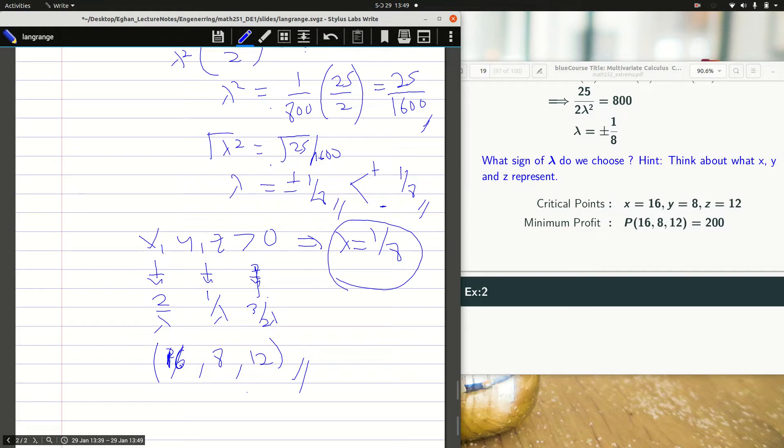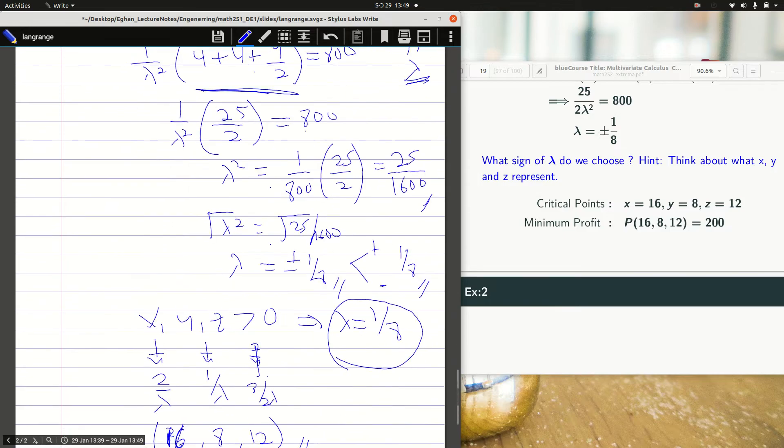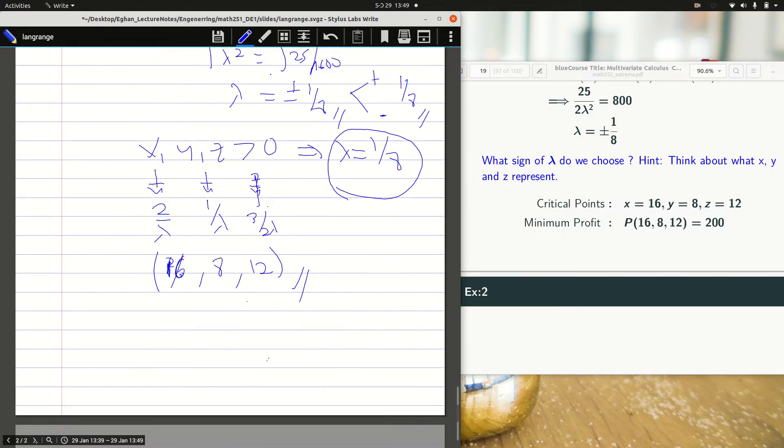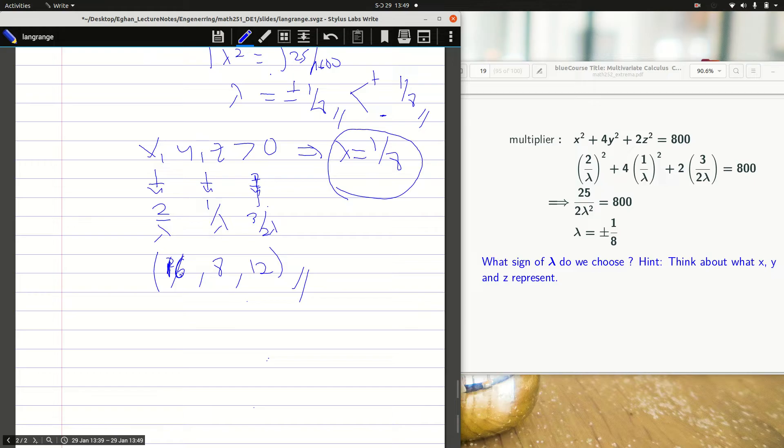Someone would want to know how do I verify my answers. The only way to verify your answers is to just plug them back into your constraint and ensure you get either less than or equal to 800. So it means that you would have to, let me go back to the constraint from here, you have to ensure that X squared plus 4Y squared plus 2Z squared, whatever I do I should have 800. So 16 squared plus 4 times 8 squared plus 2 times 12 squared, you have to verify that it is within the given constraint.